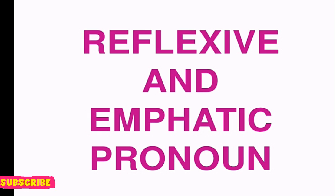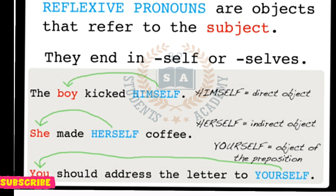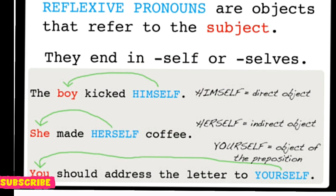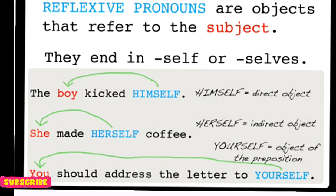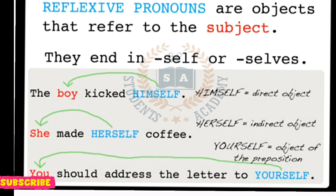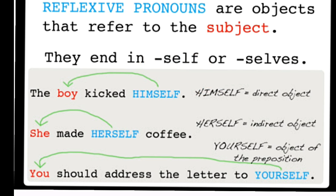اس کے بعد ہمارے پاس آ جاتا ہے reflexive and emphatic pronoun۔ Reflexive pronoun کیا ہوتا ہے — یہ the reflection of our action to the subject show کرتا ہے۔ یعنی کہ کوئی بھی چیز ہم کر رہے ہیں تو اس کا subject پر کیا اثر ہوگا وہ یہ شو کرتا ہے۔ جیسے 'the boy kicked himself' — یہاں 'boy' subject ہے اور 'himself' reflexive pronoun ہے۔ 'She made herself coffee' — اس میں 'herself' reflexive pronoun ہے۔